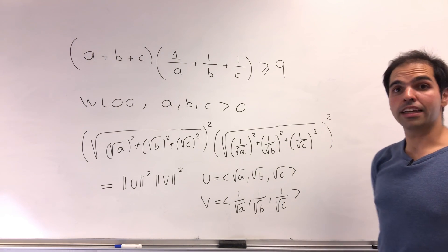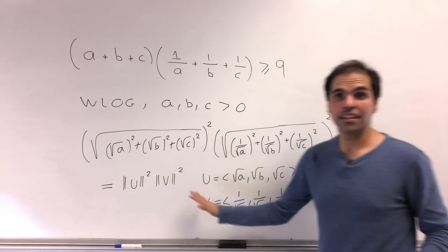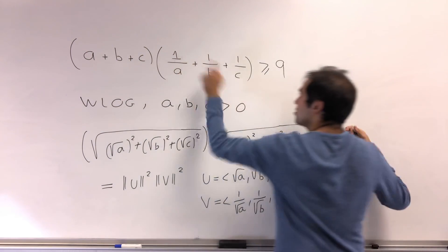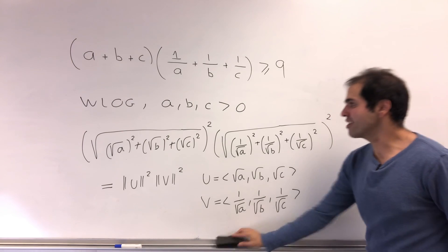And now what we would like is some identity that relates those lengths with dot products. Because notice, if you just naively multiply out those components, you get three. So somehow we want this three to appear.